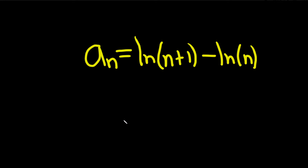Determine whether the sequence converges or diverges. Basically we have to take the limit and see what happens. As it is now, if you take the limit, you would just get infinity minus infinity, which could be anything. So let's rewrite it.